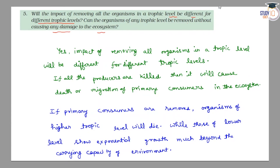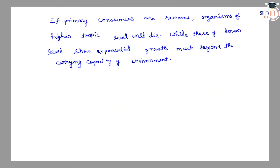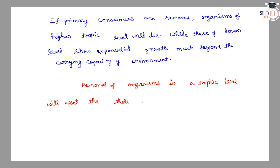Can the organisms of any trophic level be removed without causing any damage to the ecosystem? No, we cannot do this, because removal of organisms in a trophic level will upset the whole ecosystem, as all categories are linked through the food chain.